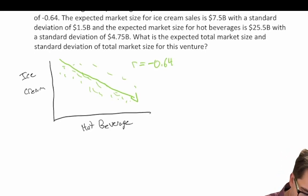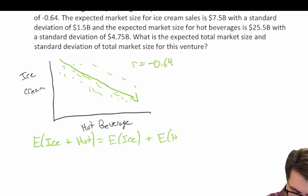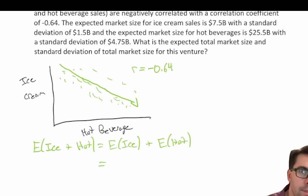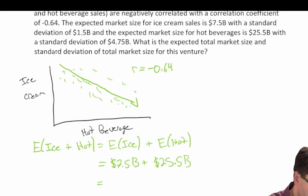Let's calculate the expected value. The expected value of ice cream plus hot beverages equals the expected value of ice cream plus the expected value of hot beverages. We're told the expected market size for ice cream sales is 7.5 billion dollars and the hot beverage market size is 25.5 billion dollars, so 7.5 plus 25.5 gives us an expected value of 33 billion dollars.